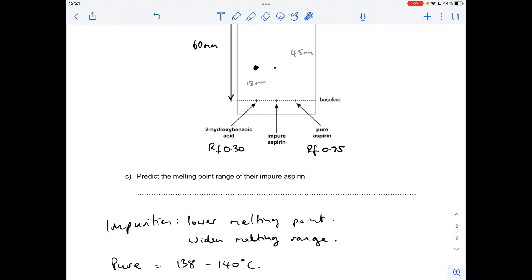All we need to do is choose a melting point less than 138. So I'm going for 130 and I want my range to be more than 2 degrees C, so let's go 6. I'm going to say 130 to 136 degrees C. Obviously there are loads of possible answers, so long as you're lower than 138 and wider than 2 degrees C for your range.